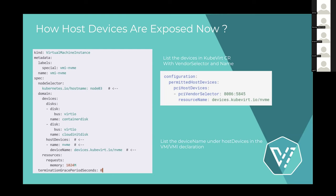After the admin configures the permitted host devices, when defining the virtual machine, the user can point to the device in the host device section using the device name. It finds a suitable vendor selector and allocates to that. Under the hood, this is managed by a component in KubeVirt called the virt-handler, which is a daemon set whose task is to discover devices and allocate them using the device plugin framework.